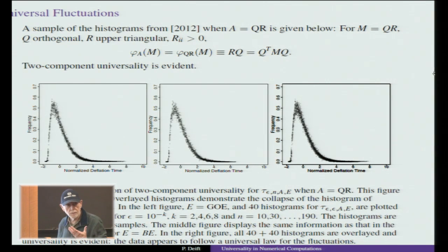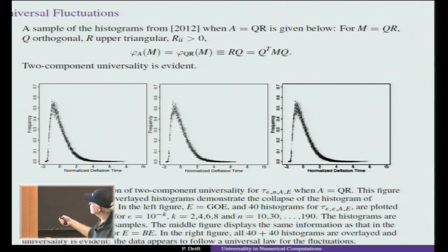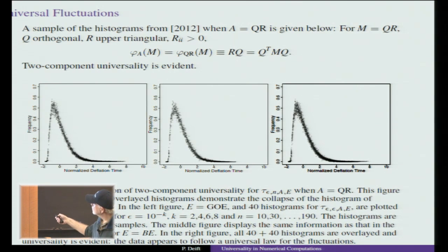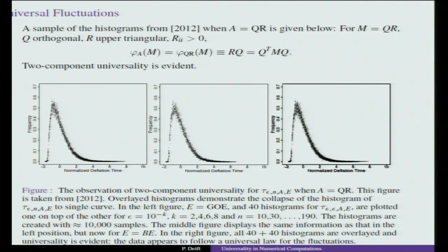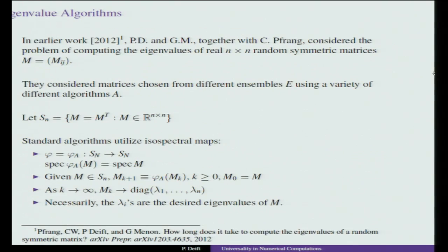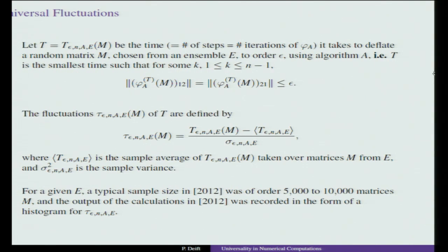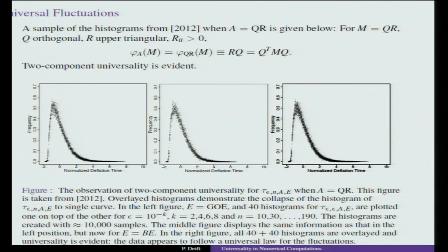What you find for perhaps the most famous eigenvalue algorithm — the QR algorithm — is as follows. The QR algorithm works by taking matrix M and factoring it as Q times R, where Q is orthogonal and R is upper triangular with positive entries. Then φ_QR is obtained by interchanging QR to get RQ. Solving for R gives R = Q^T M, and plugging in confirms this is an isospectral action. What you're looking at are results for running this algorithm with two different ensembles, yielding 40 histograms total.